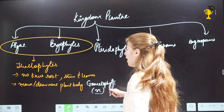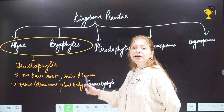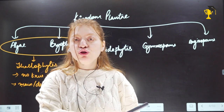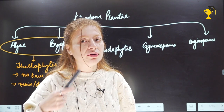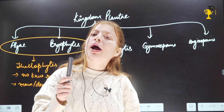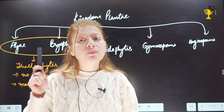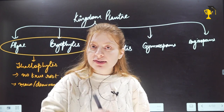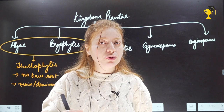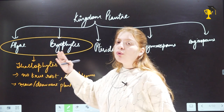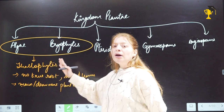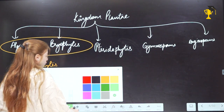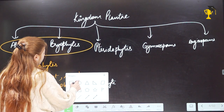Gametes can be carried directly, as in angiosperms where pollen grains are the male gametophyte containing male gametes, and the embryo sac contains the female gamete egg. The gametophytic plant body can also have sex organs that produce gametes. As plant groups evolved, the gametophytic plant body shifted to the sporophytic plant body — gametophyte reduced and sporophyte became dominant.